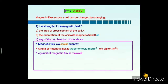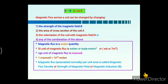The CGS unit of magnetic flux is Maxwell, and the relationship between the SI unit and CGS unit is: 1 Maxwell equals 10 raised to minus 8 Weber.